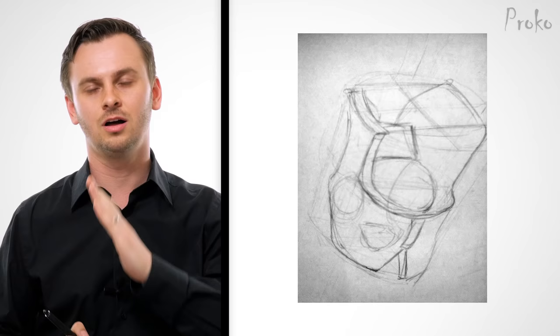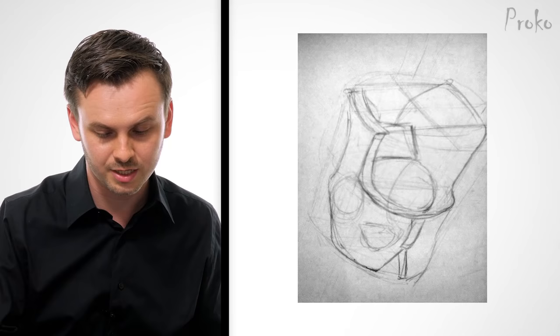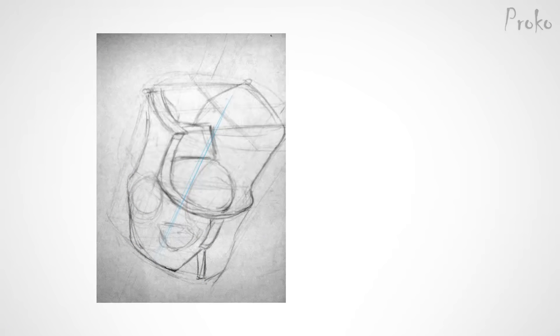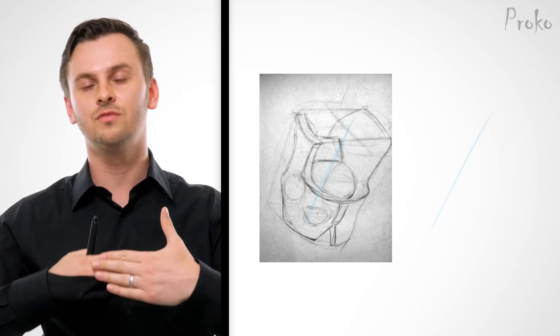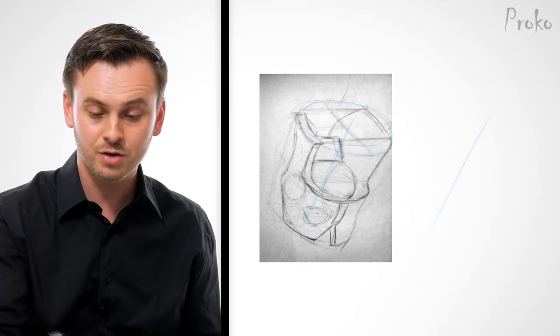The first thing to start with is to get the angle of the bucket — the tilt, the long axis. When I look at yours, I can see this is the angle of the long axis, so I'm going to draw that angle in lightly. The second thing is to get the angle of the ellipse on the top cap — this top plane that you drew. And you actually drew that angle correctly.